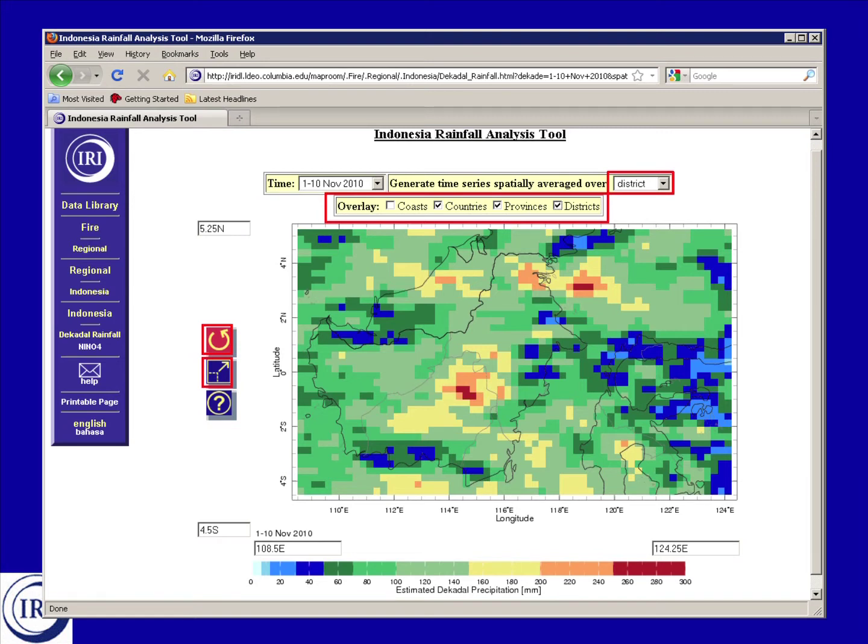If you decide that you want to zoom back out and view the full extent of the map again, click on the middle button highlighted in red here.